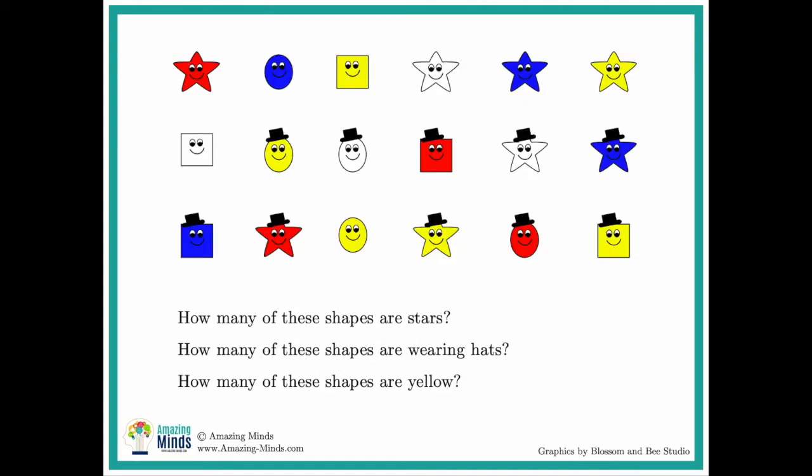You can use objects and in this case Blossom and Bee designed some attribute shapes for us that we could use today. So we have different shapes, different colors, and some are wearing hats and some are not. So I would just show this and say okay there are three questions, work with your group or maybe they're working individually to find the answers to those three questions. Now they may be thinking that is so easy and pretty boring but you can assure them it won't remain easy.